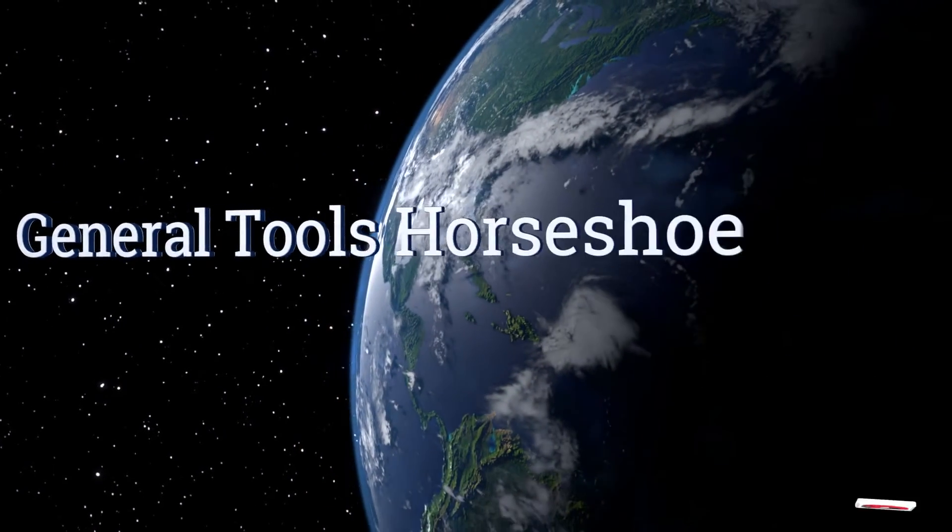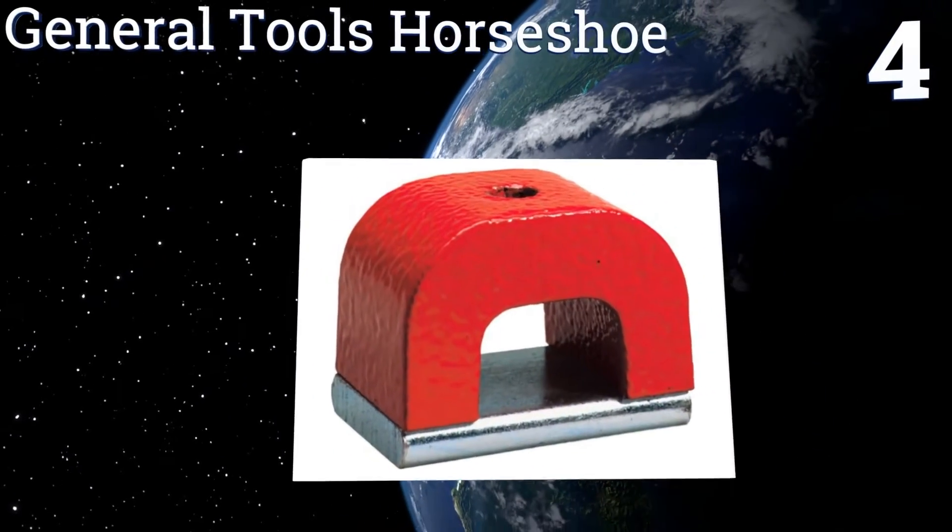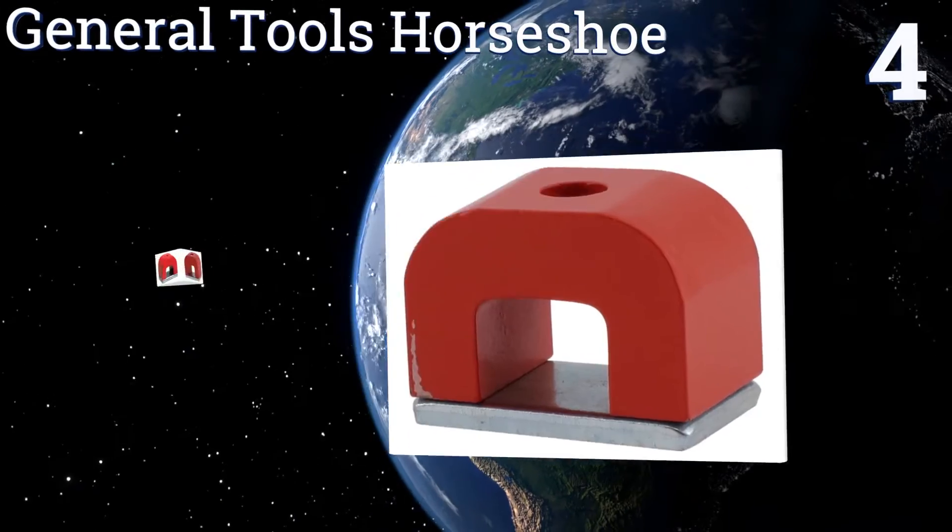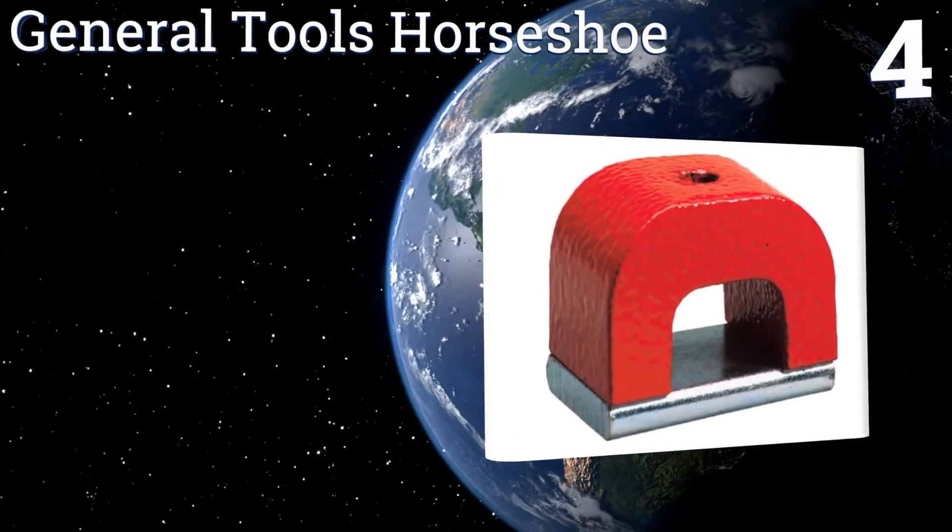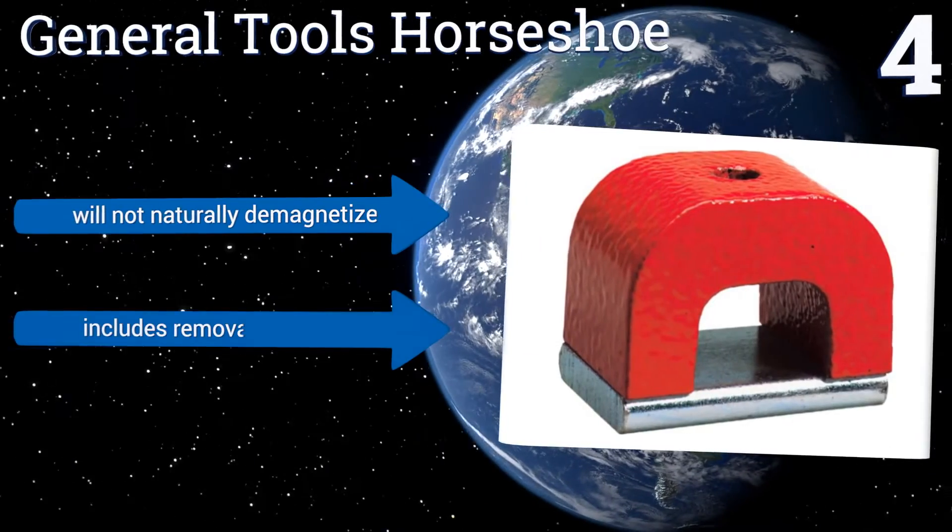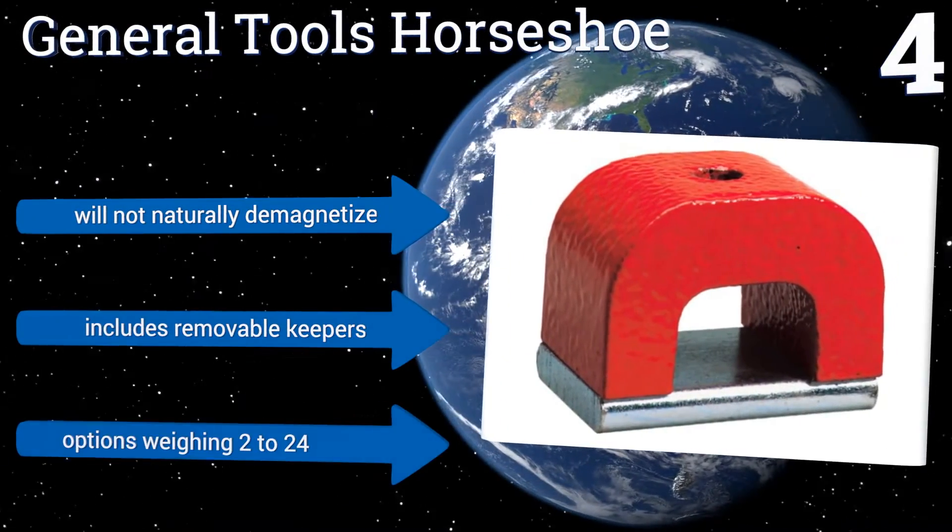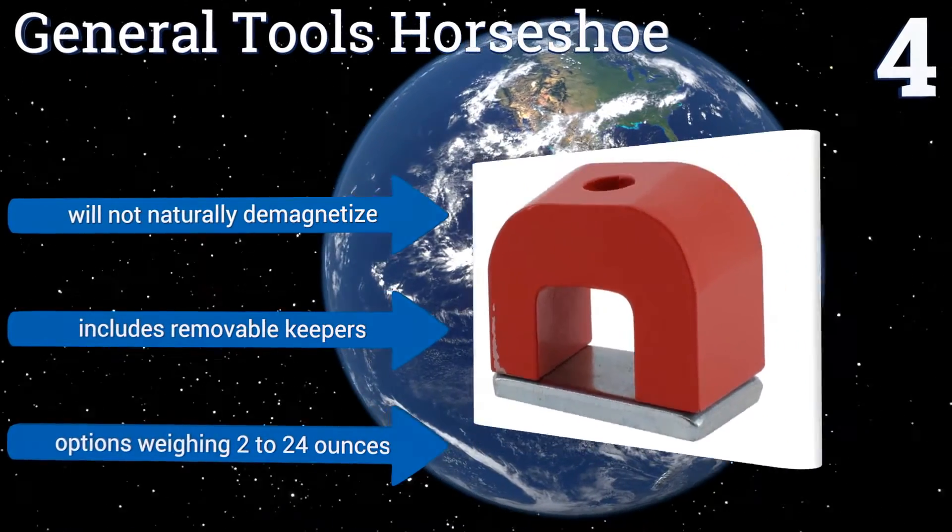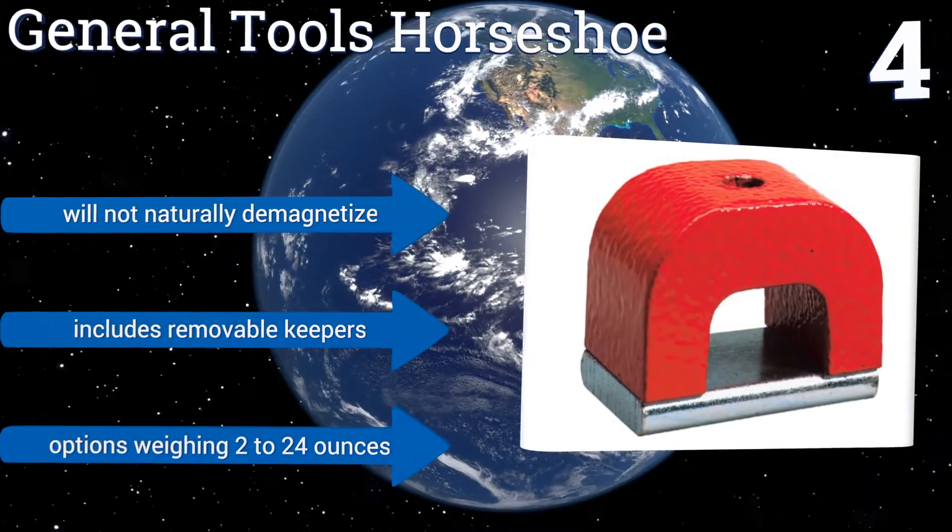Halfway there. Power listed number 4, available in an array of different pull powers, the industrial grade General Tools Horseshoe is tailor-made for handling steel or iron parts. It even features a hole for attaching to welding jigs, conveyors, racks and other gear. It won't naturally demagnetize and includes removable keepers. It's available in options weighing from 2 to 24 ounces.